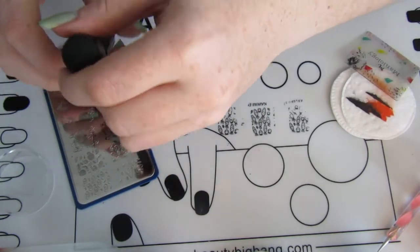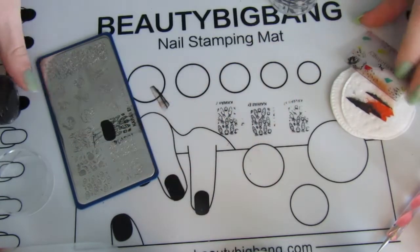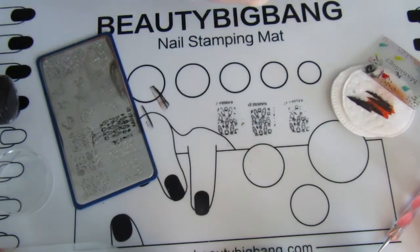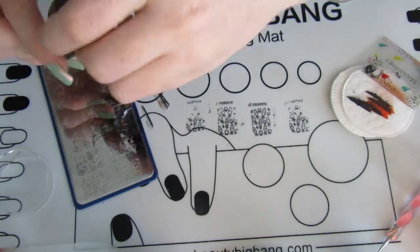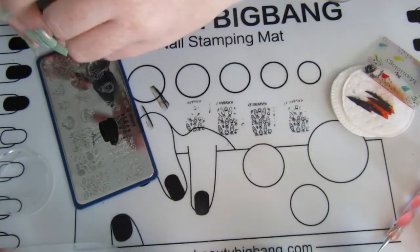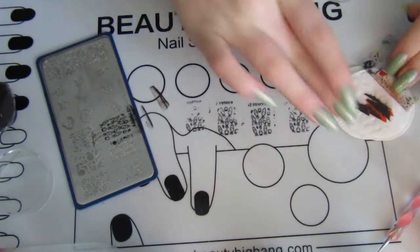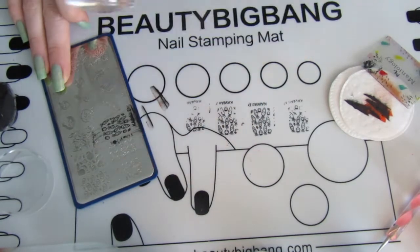I originally thought to maybe use two different tones of orange, but it sort of washed out the face and looked a bit funny with the different details on the stamped image. So I went with black and orange just to create that nice contrast.